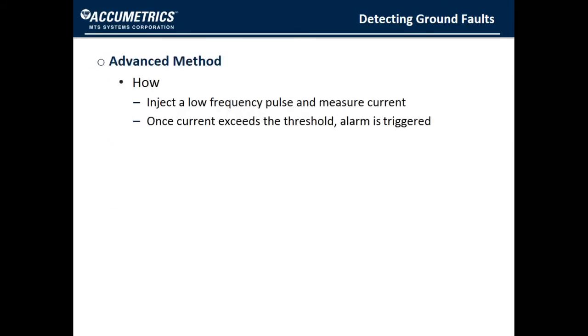A more advanced method of ground fault detection using a pulse injection method known as EFREM is available from Accumetrics. Rather than injecting a DC voltage, we inject a low frequency pulse between the field winding and the negative excitation. We measure the current as the pulse goes up and down. From that information, we can fully characterize the fault. An alarm is triggered at a specified fault severity no matter where the fault is located.